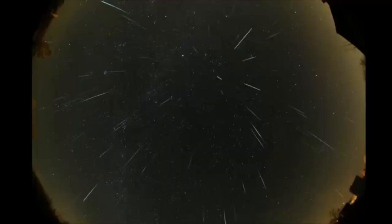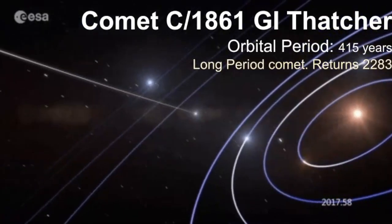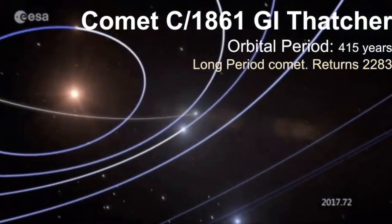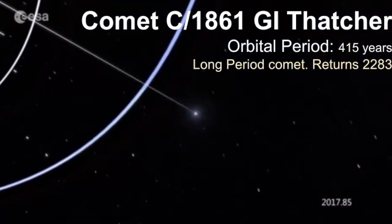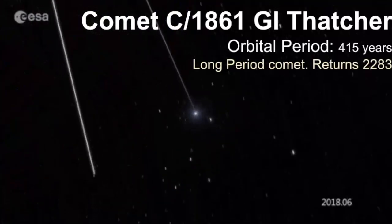The source of this meteor shower are particles of dust shed by the long period comet known as C-1861G1, also called the Thatcher Comet, since A.E. Thatcher discovered it in 1861.